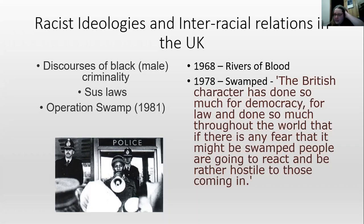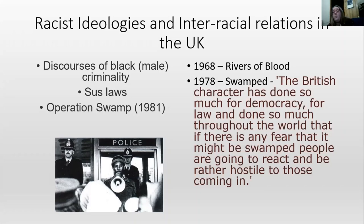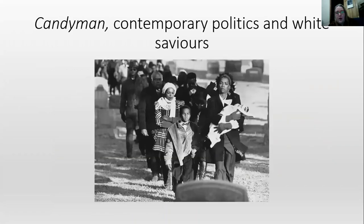In 1978, Margaret Thatcher used seemingly reasonable language to construct an image of Black criminality and threat, disguising violent rhetoric behind measured, polished construction. She stated: 'The British character has done so much for democracy and law throughout the world, that if there's any fear that it might be swamped, people are going to react and be rather hostile to those coming in.' 'Rather hostile' minimizes the racialized violence occurring at the time. The British character is implicitly understood as the white British character, positioned in contrast to the 'swamping' by people of other races.